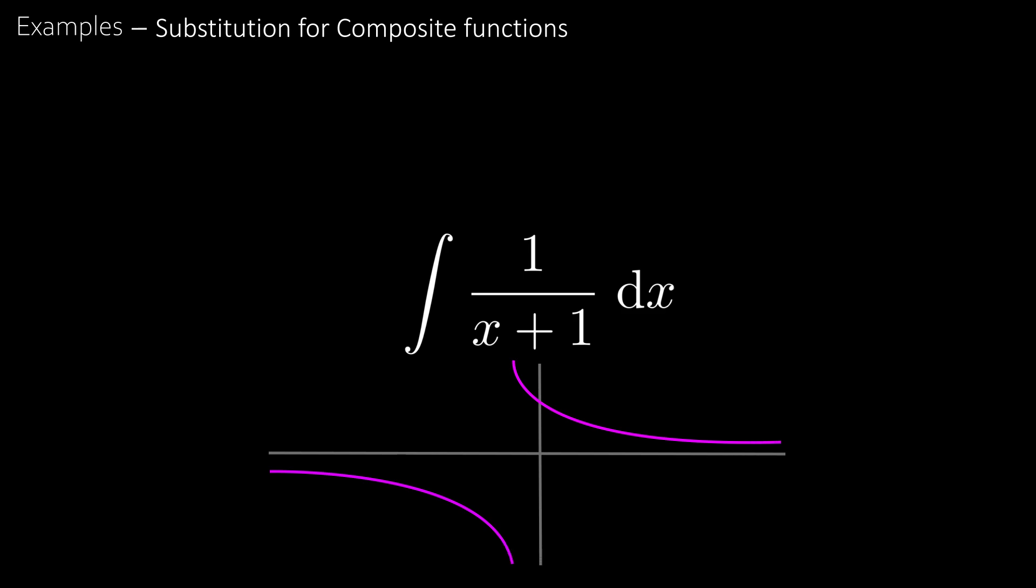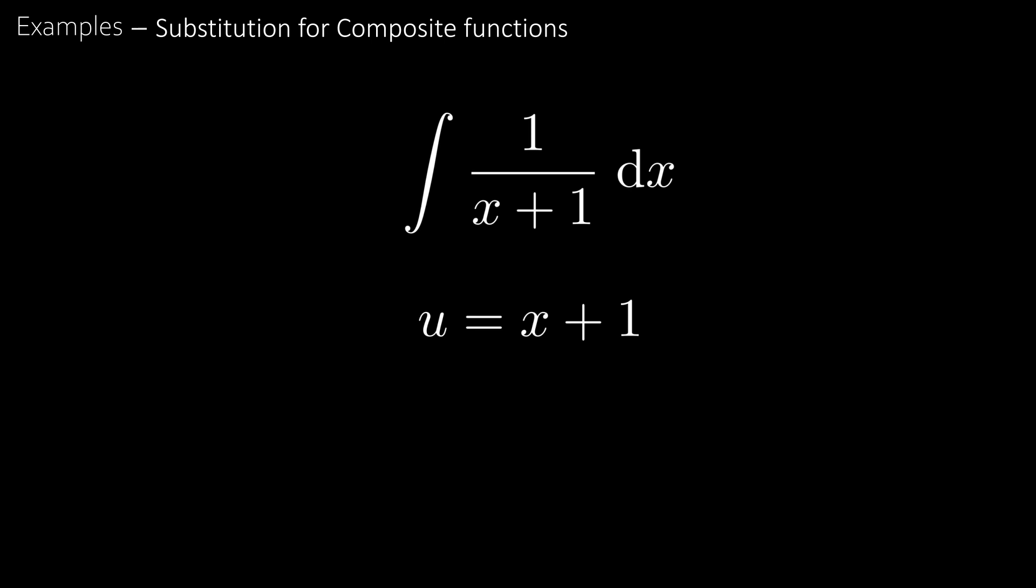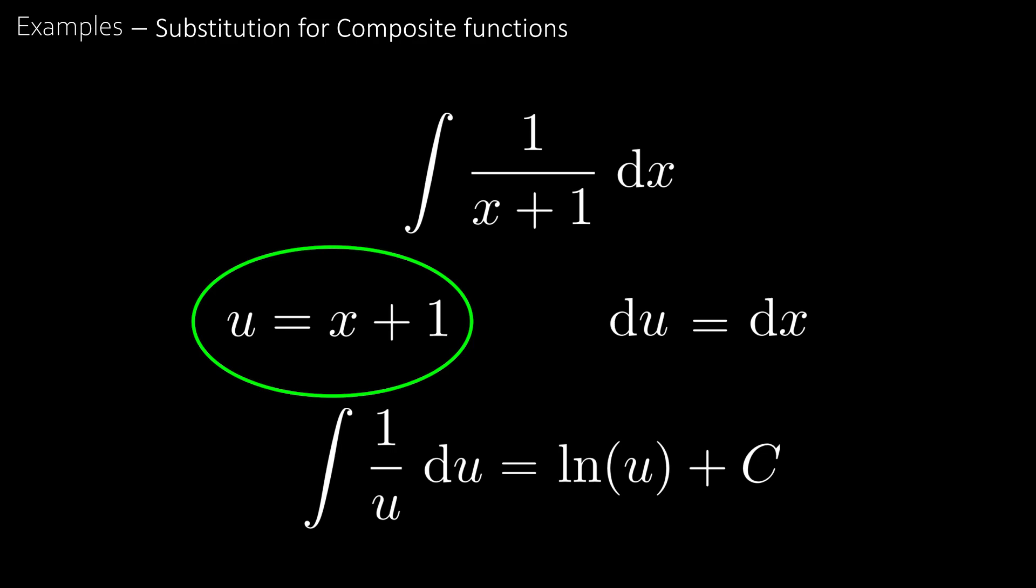Let's now try the second type, substitution for composite functions. Say you wanted to find the integral of 1 over x plus 1. We begin by substituting u equal to x plus 1, which is the inner function. We know that du by dx is equal to 1, that means du is equal to dx. This gives the integral of 1 over u du, which is a classic integral with the solution ln u or ln mod u. Since u equals x plus 1, we get ln of x plus 1 plus c.